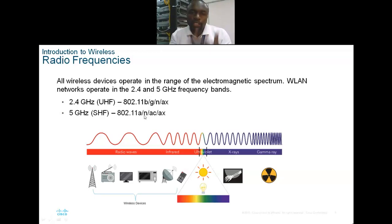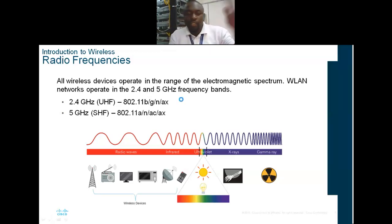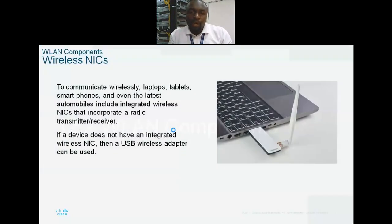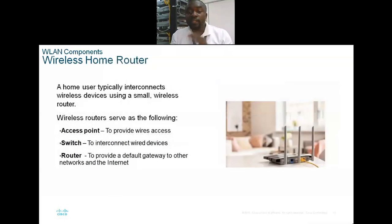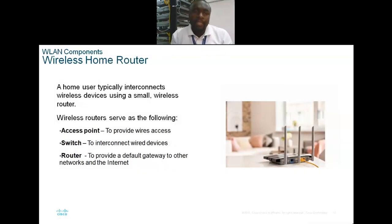The first wireless LAN component is the network interface card, which is the card you use to communicate to the wireless access point or transceiver. This networking card can come built into a laptop or device, or you can buy it externally.